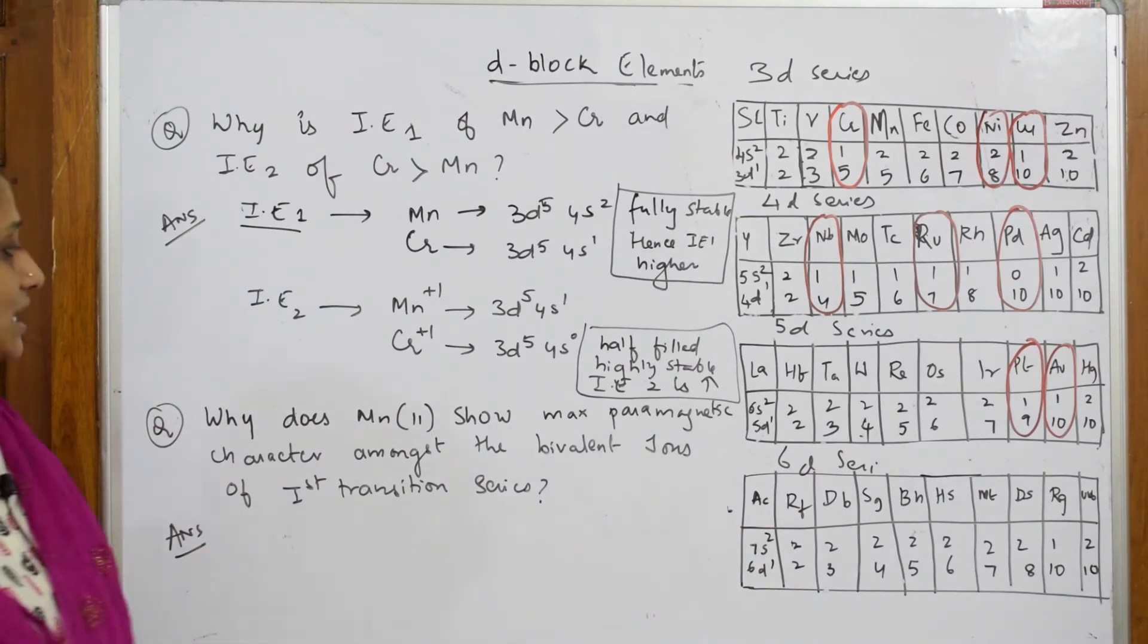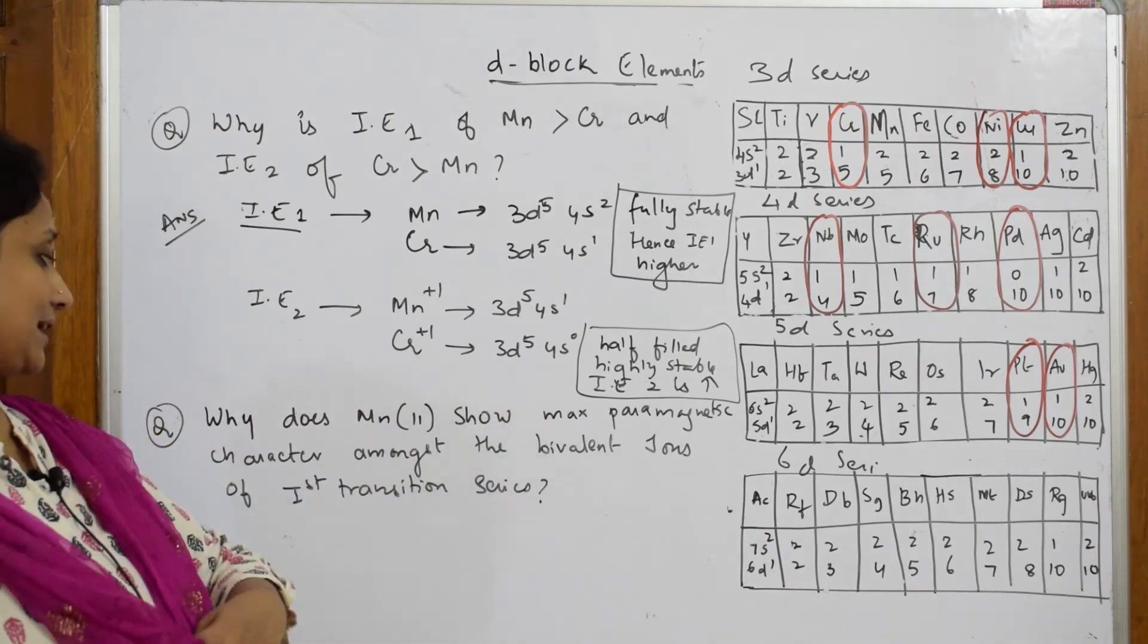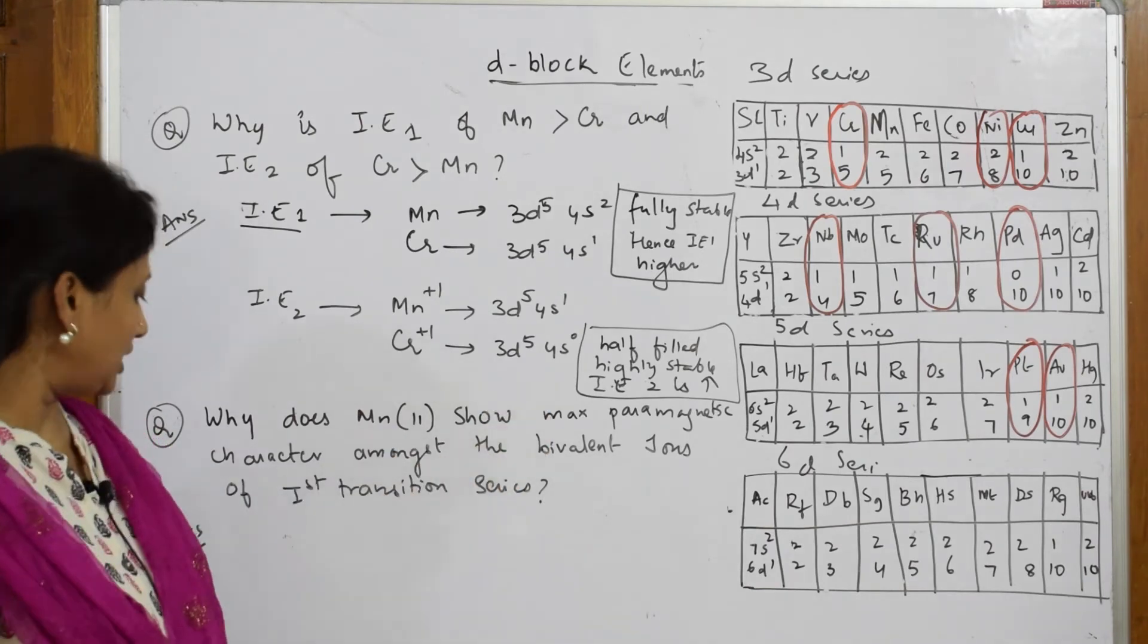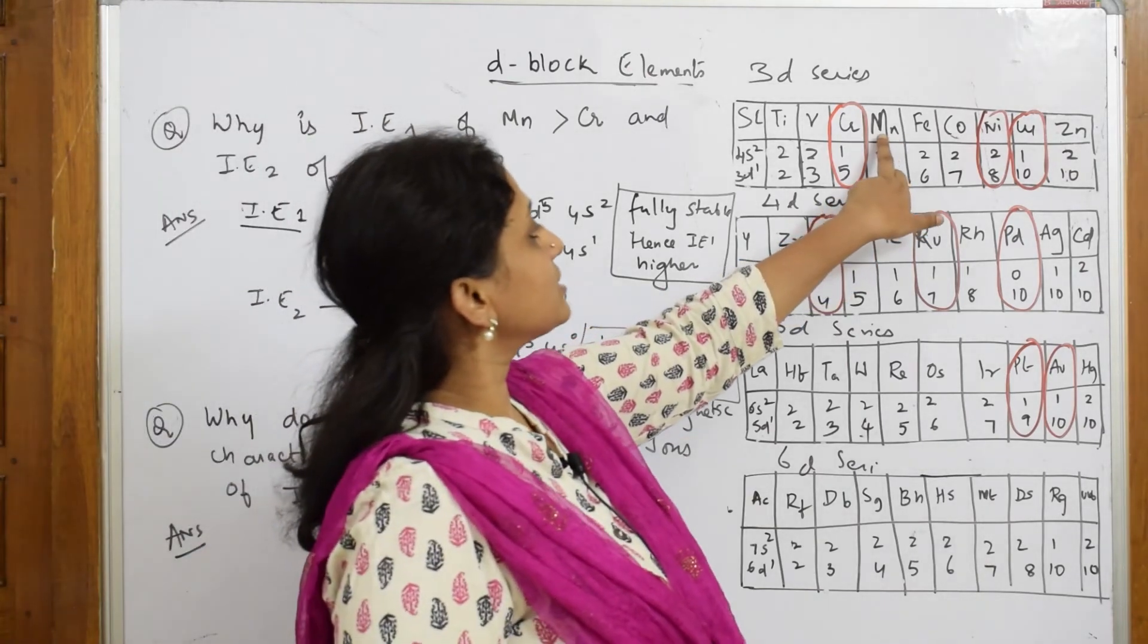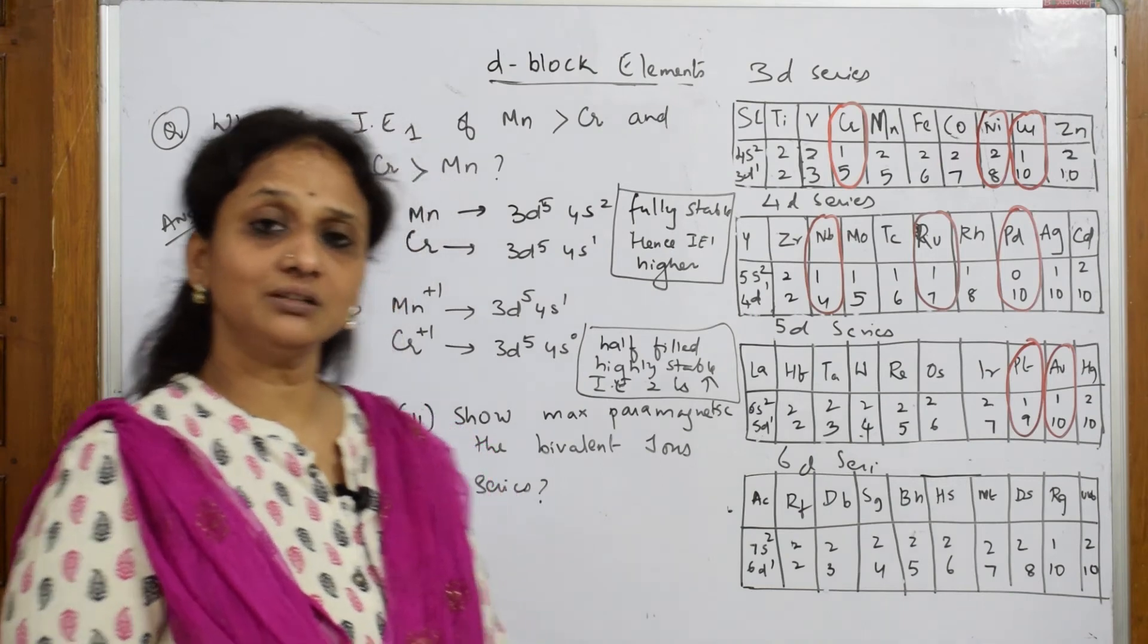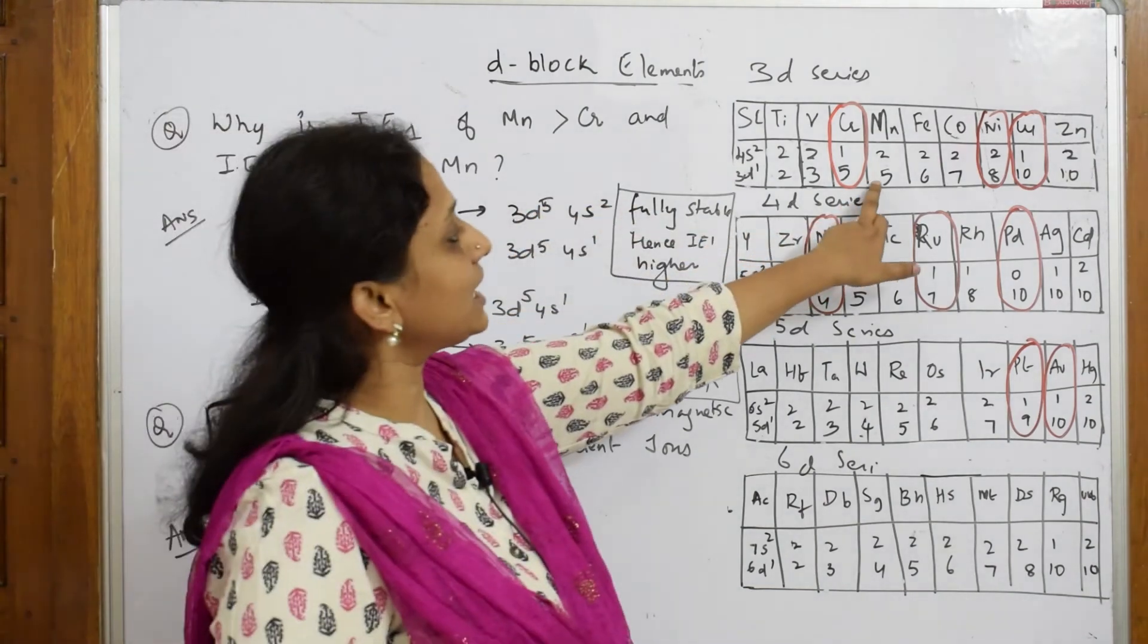Let us start with this. Why does Mn2+ show maximum paramagnetic character among the bivalent ions of the first transition series? They're asking a question about Mn. They've already given me the oxidation state, Mn+2.